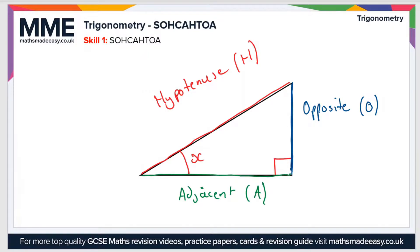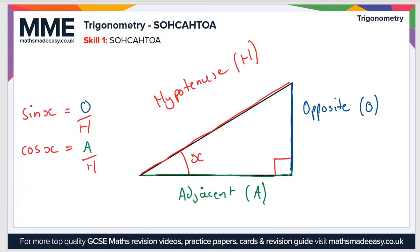From here, let's define the three trigonometric functions. The first one is sine x. Sine x is equal to the opposite side divided by the hypotenuse. The next expression is cosine x — cos x — and that is equal to the adjacent side divided by the hypotenuse. And then the final expression is tan x, and tan x is equal to the opposite divided by the adjacent.